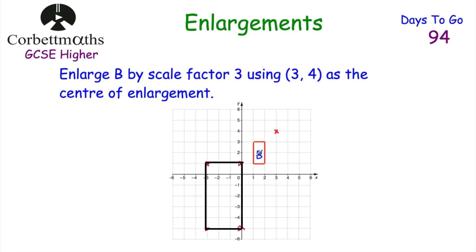One important thing to note: when we enlarge B by scale factor 3, the lengths of each side become 3 times bigger — so it's now 3 by 6, meaning the perimeter is 3 times bigger. However, the area scales differently. Because you're enlarging both the length and the width by 3, the area becomes 3×3 = 9 times bigger. Later we'll look at similar shapes and how to find areas and volumes of enlarged shapes.